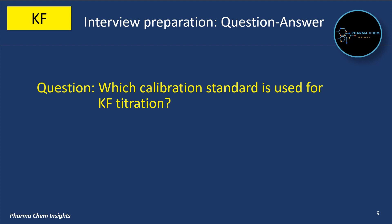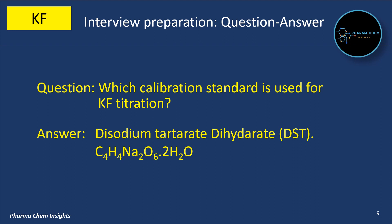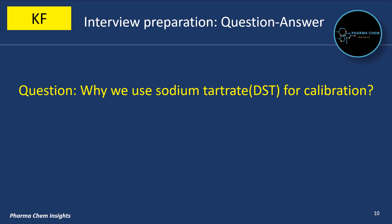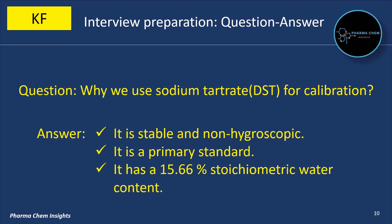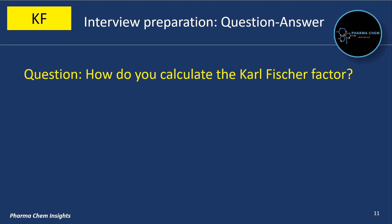Which calibration standard is used for KF titration? Disodium tartrate dihydrate (DST) is used for calibration of KF titration. Its molecular formula is C4H4Na2O6 · 2H2O. Why do we use disodium tartrate DST for calibration? It is stable and non-hygroscopic. It is a primary standard and has a 15.66% stoichiometric water content.